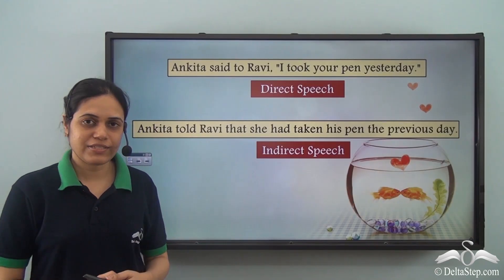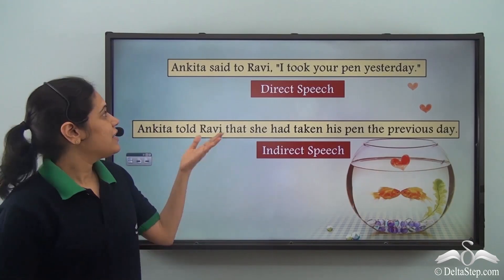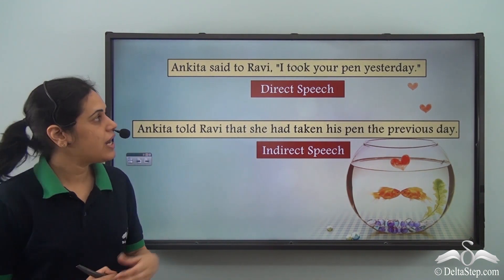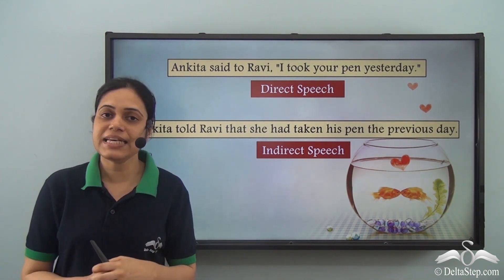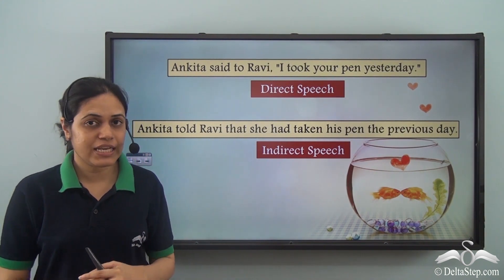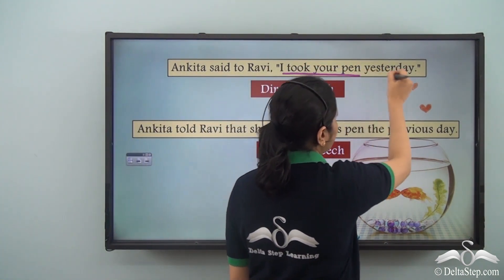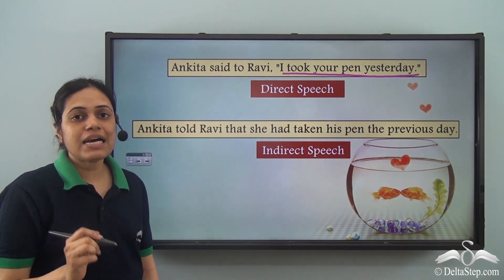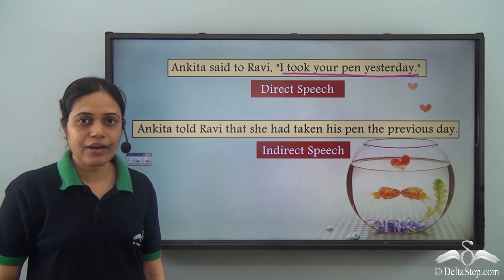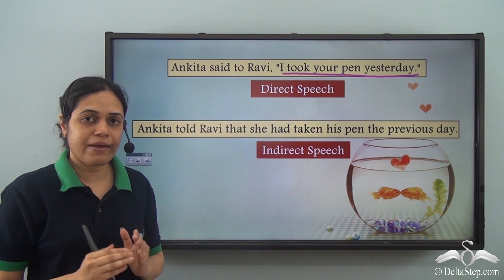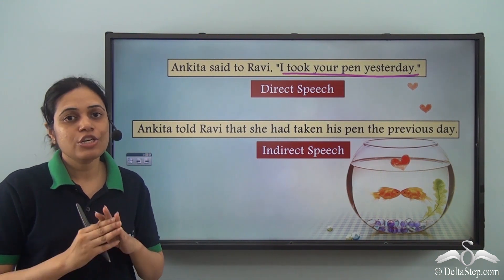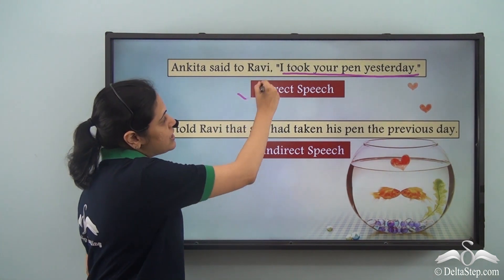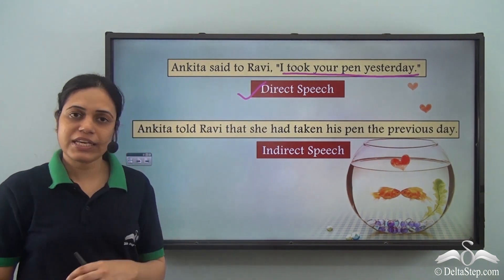Look at these two sentences. This sentence is: Ankita said to Ravi, 'I took your pen yesterday.' In this case we are directly quoting the words of Ankita. These are the exact words of Ankita and we have put them within inverted commas. So we are directly quoting the words of the speaker. This is direct speech.